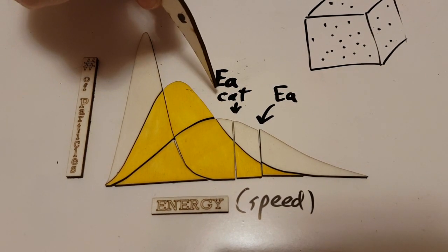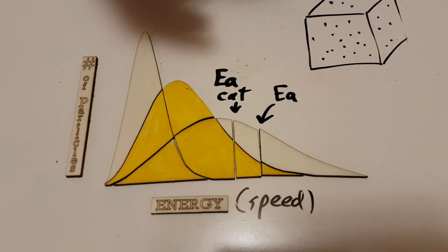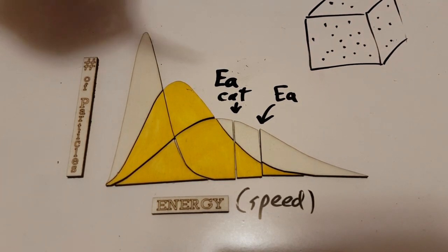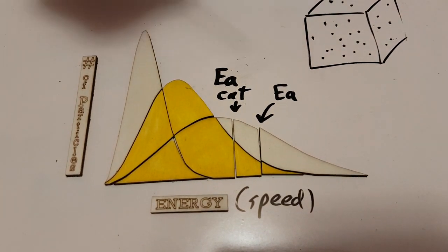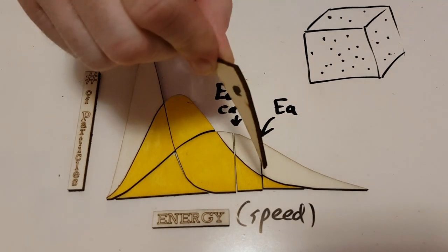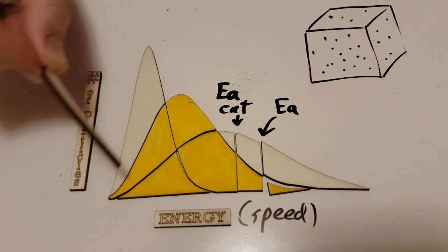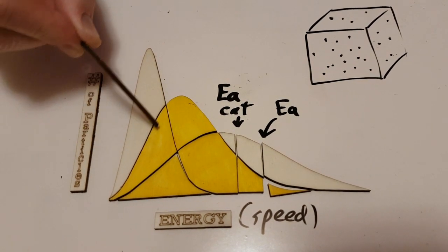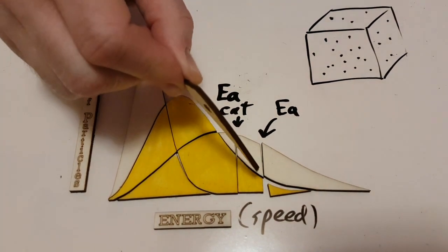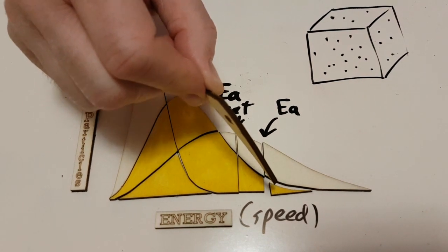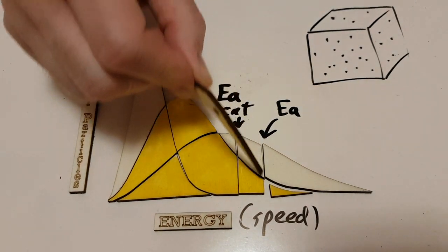So what questions could the IB ask you? Well, they could ask you to explain what this little part is here. Which curve is that? Well, it's the middle curve, so it's the middle temperature, and these particles have energy equal to or greater than the activation energy.